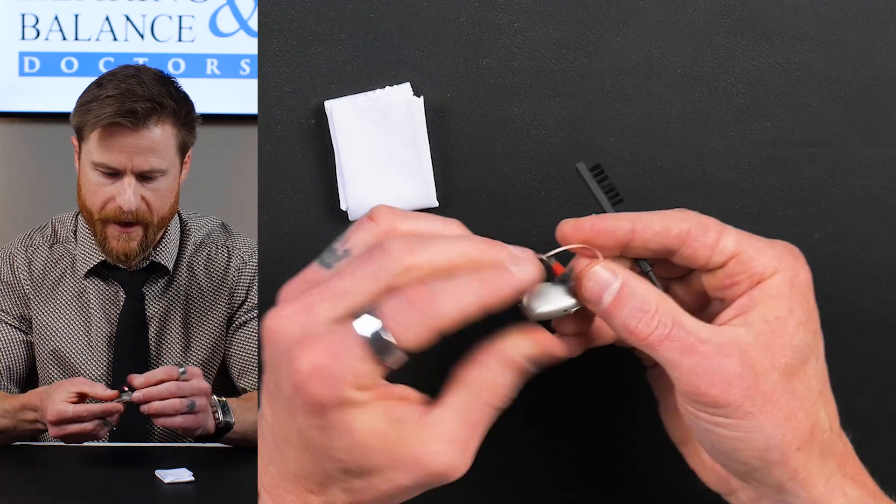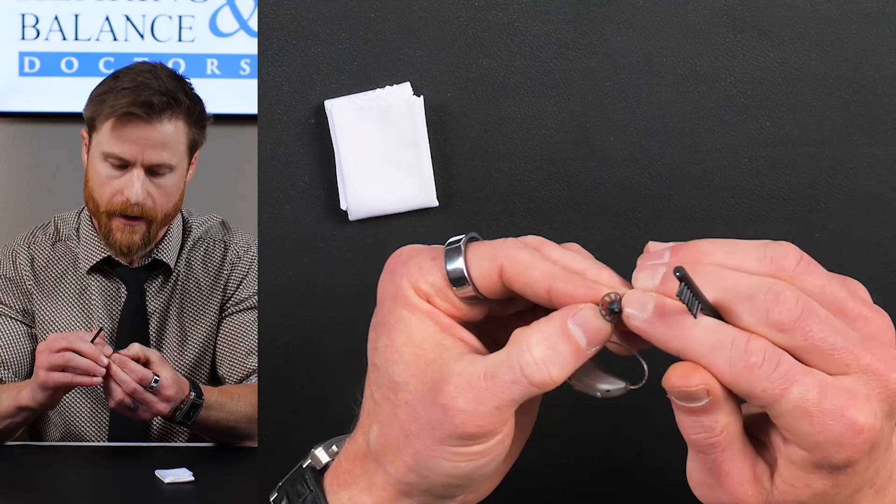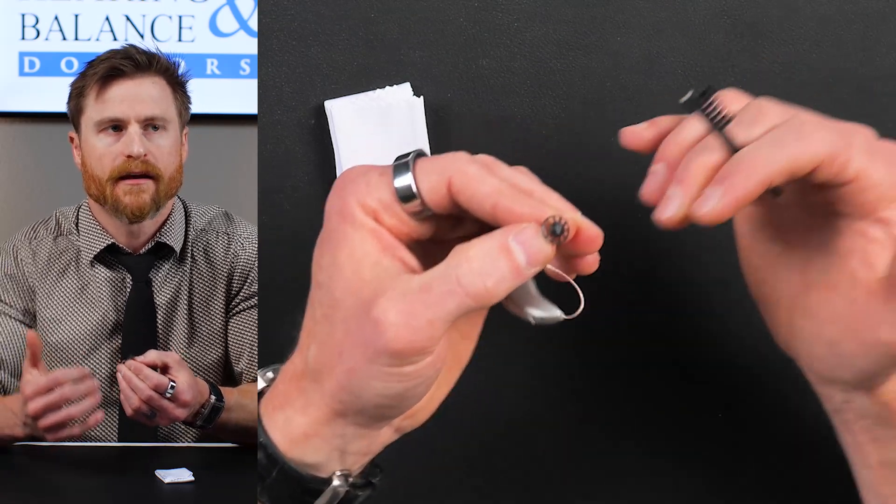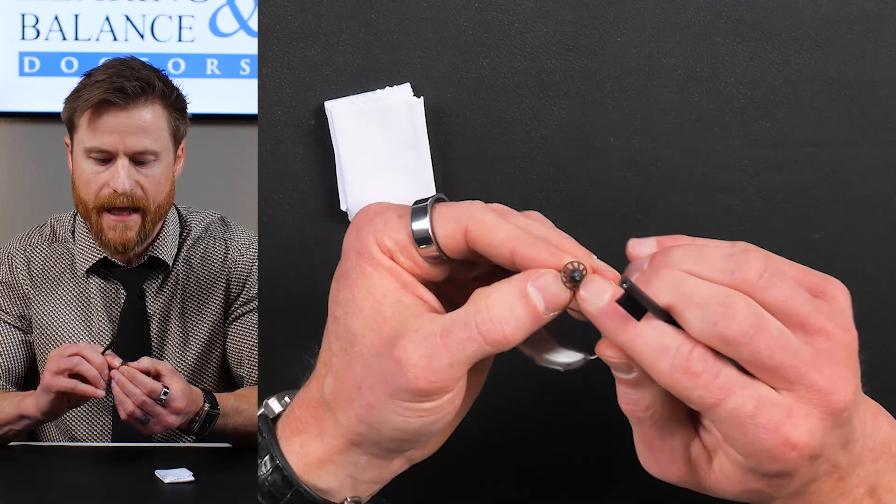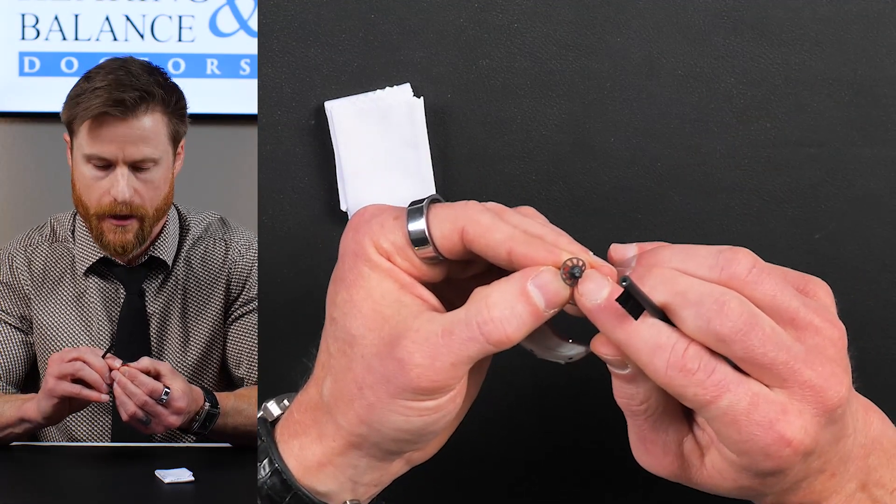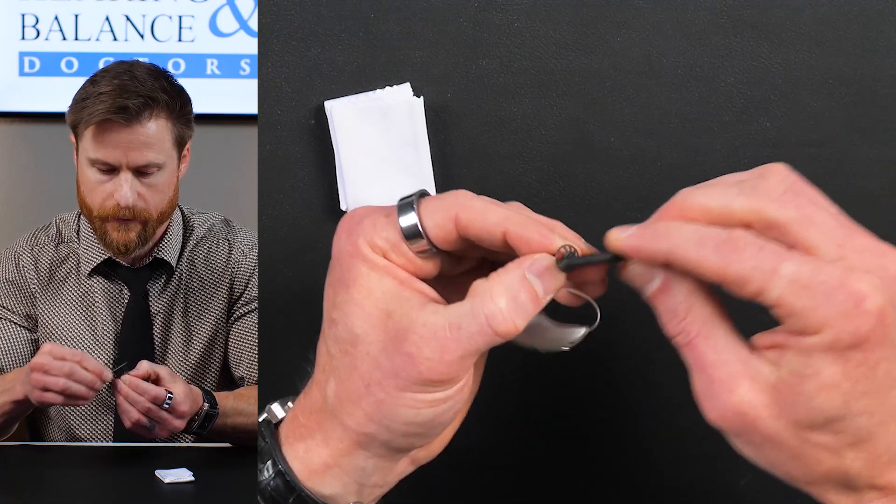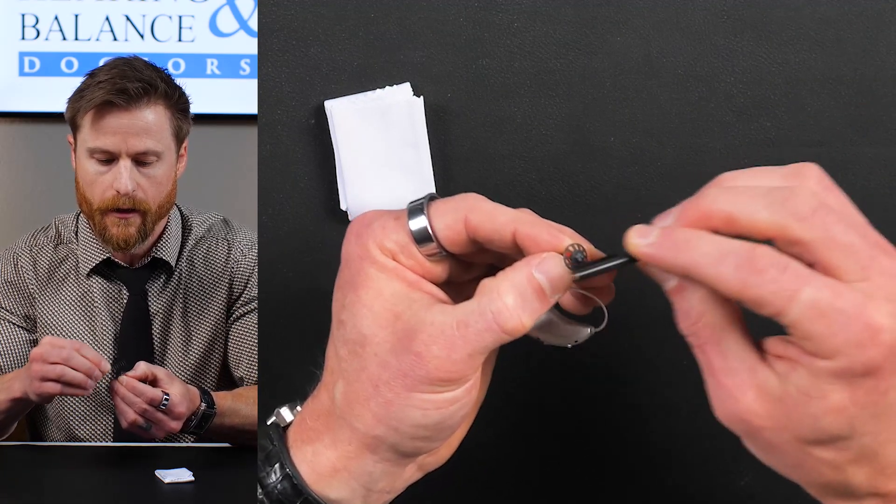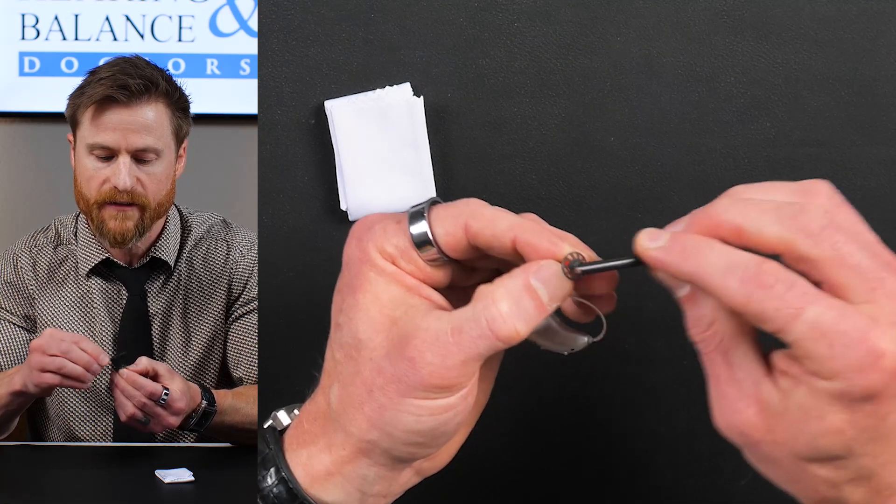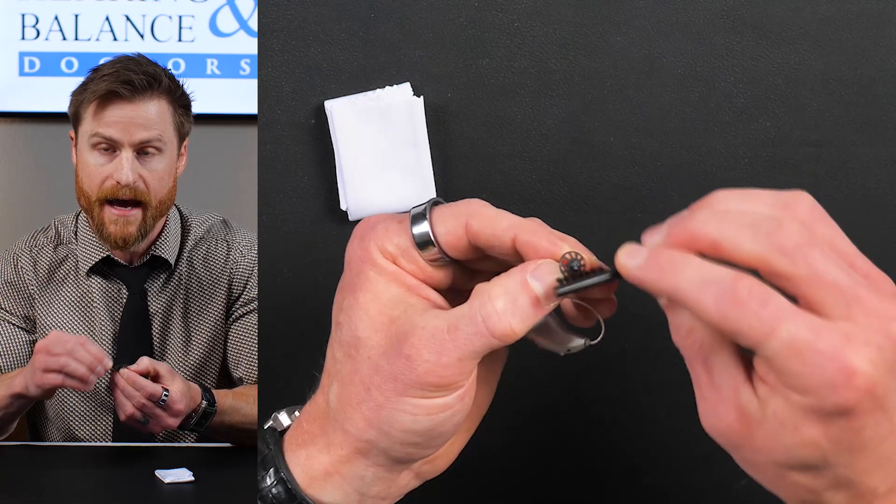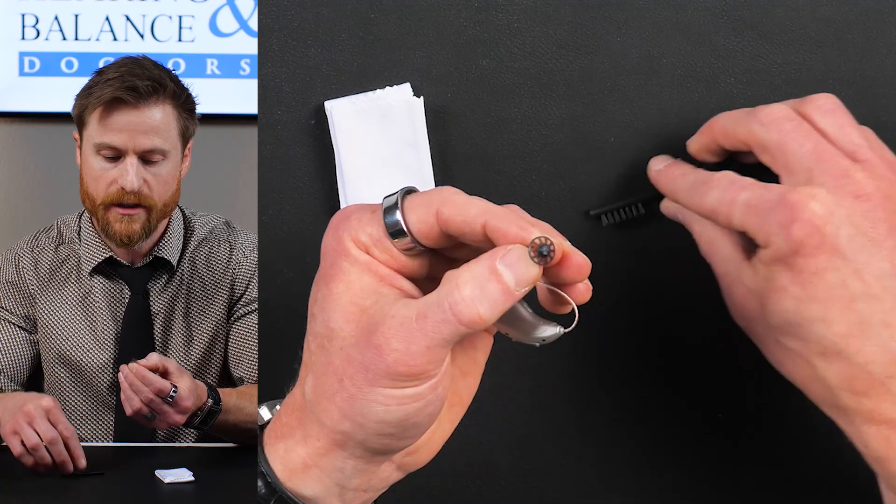After that, then you want to brush the dome. Wax can get clogged up in this dome. If you're lucky enough to have the thin, runny, soupy, goopy wax, then that's more likely to plug this filter up in this dome. So first step, let's clean the dome. So again, in the morning, why are we doing this in the morning? Because any wax left over from the previous day is dry by that point. So now it's just flaking right off. Perfect. Dome is clean.